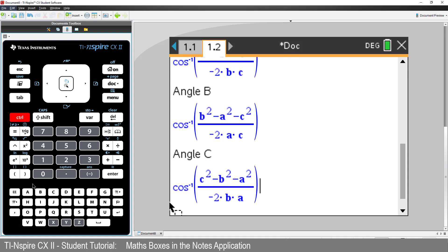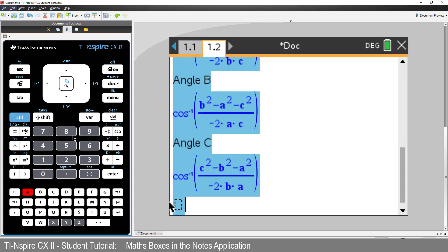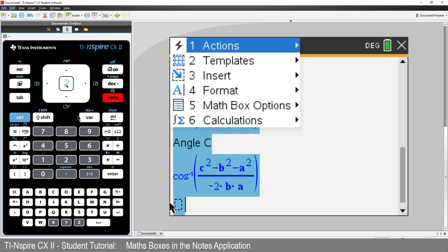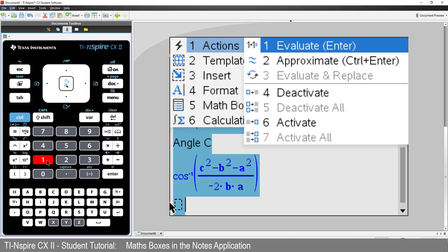So, press CTRL A to select everything. Press Menu, Actions, and Evaluate.